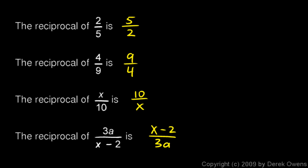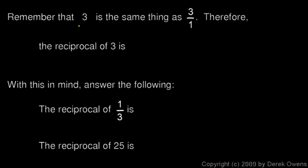Now what about a number? What if I had the number 3 — what's the reciprocal of 3? Well, remember that 3 is the same thing as 3 over 1. So instead of 3, I could write it as a fraction 3/1, and the reciprocal of 3 would be the same as the reciprocal of 3/1, so it would just be 1/3.